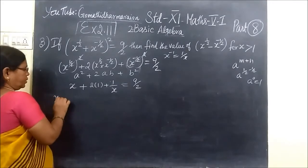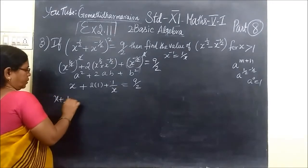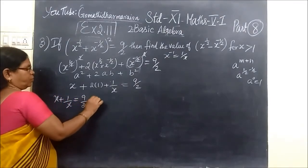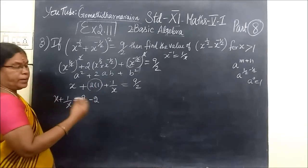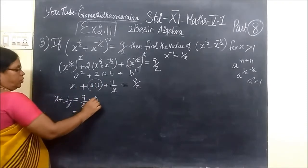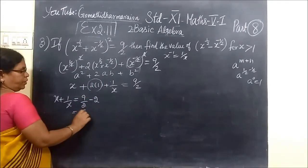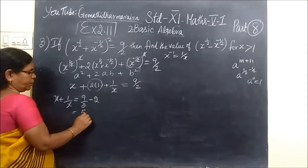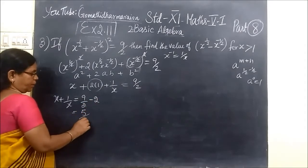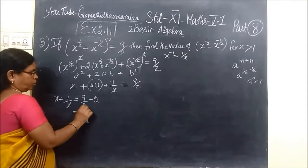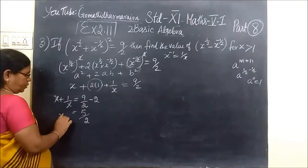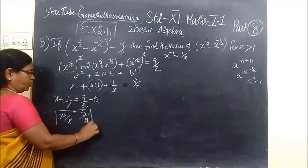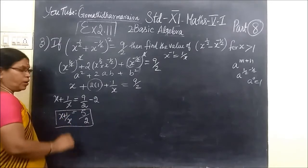So x + 1/x equals 9/2 minus 2. If you cross multiply, 2·2 = 4, so 9 minus 4 = 5, giving 5/2. So x + 1/x = 5/2. We will use this value later, so let's mark it as equation 1.